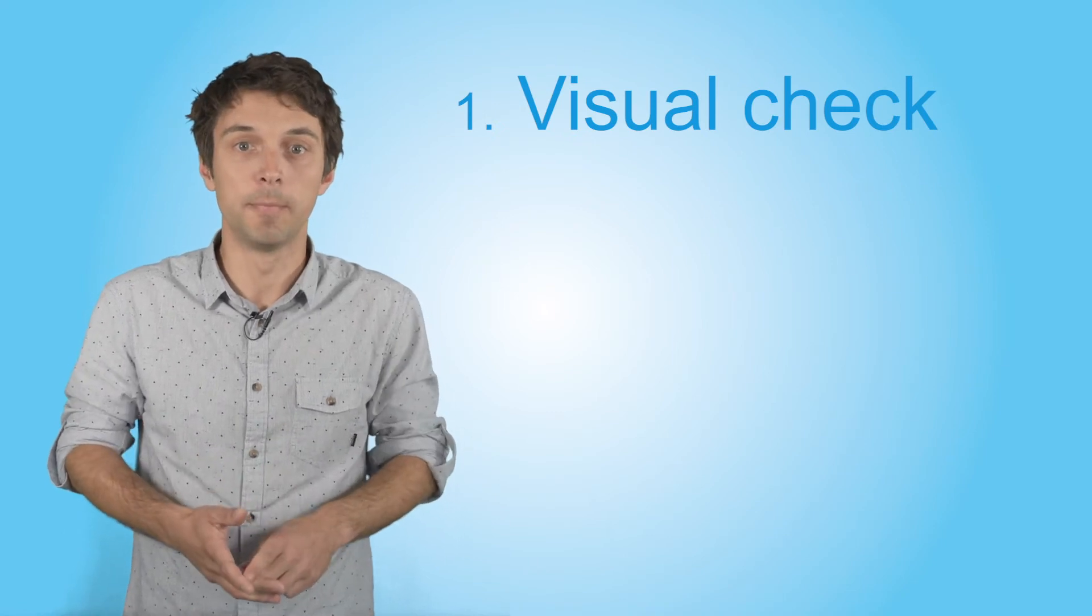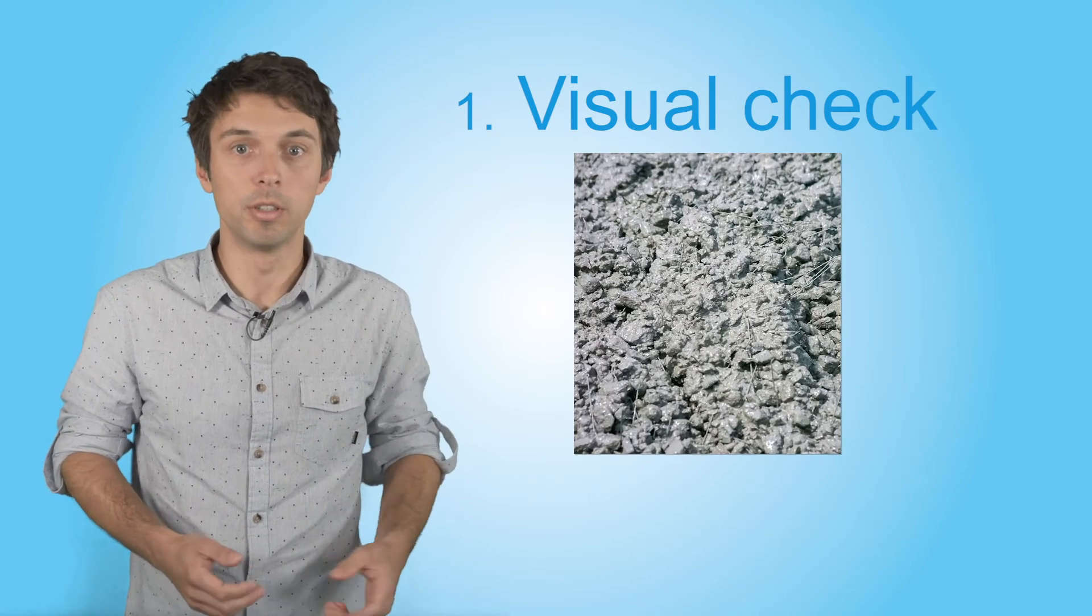There are three methods available to check the fiber distribution in the fresh concrete mix. The first one is to just look at the mix while it's being placed. You can usually get a good feel about the homogeneity of a mix by simply looking at it.